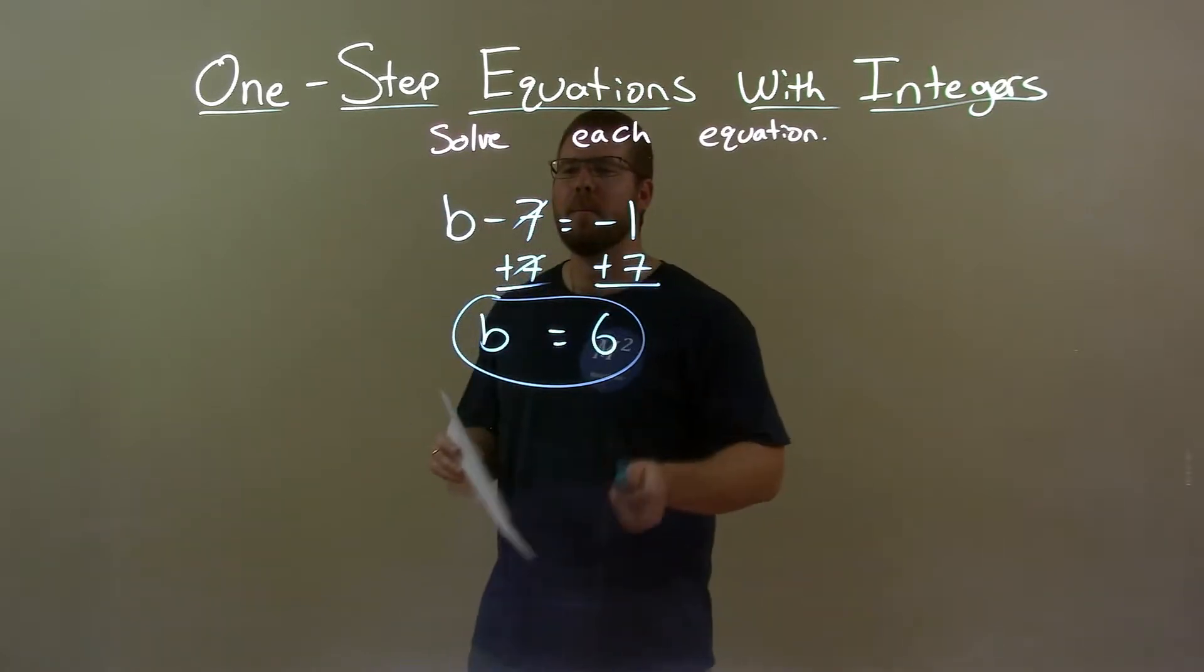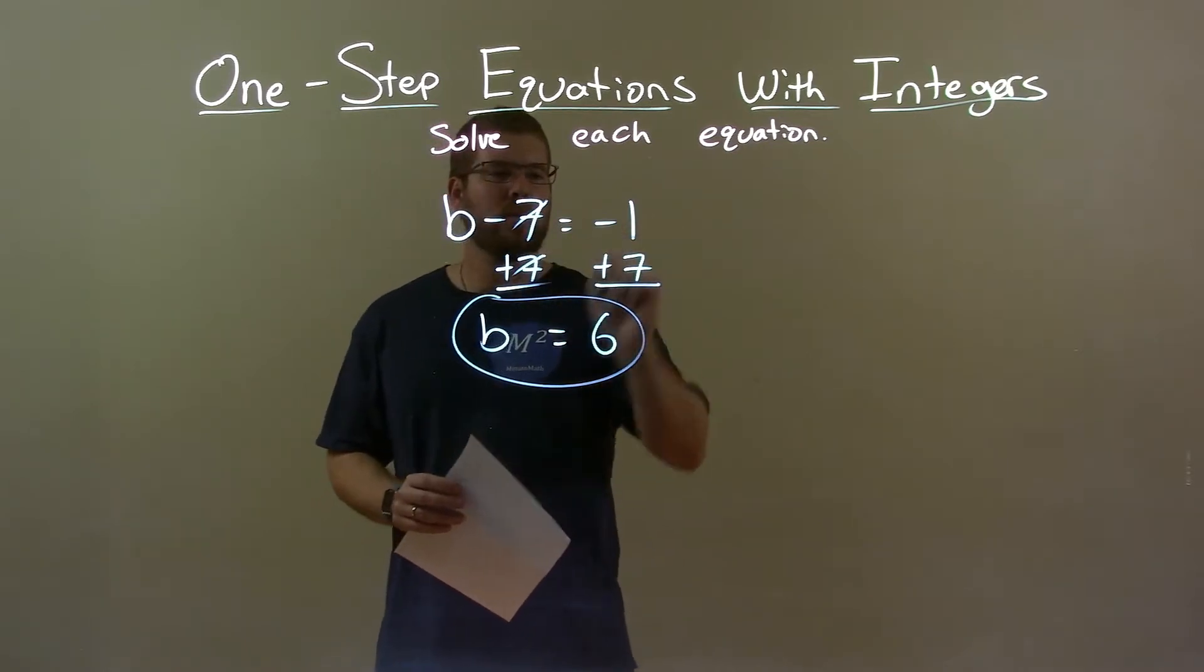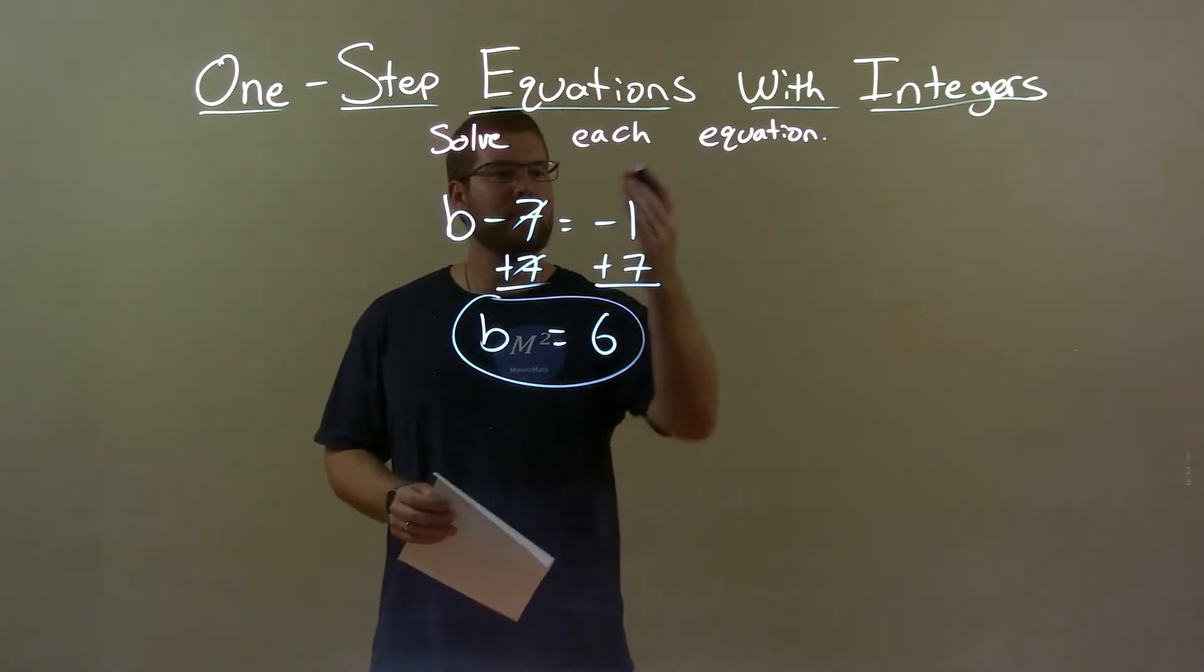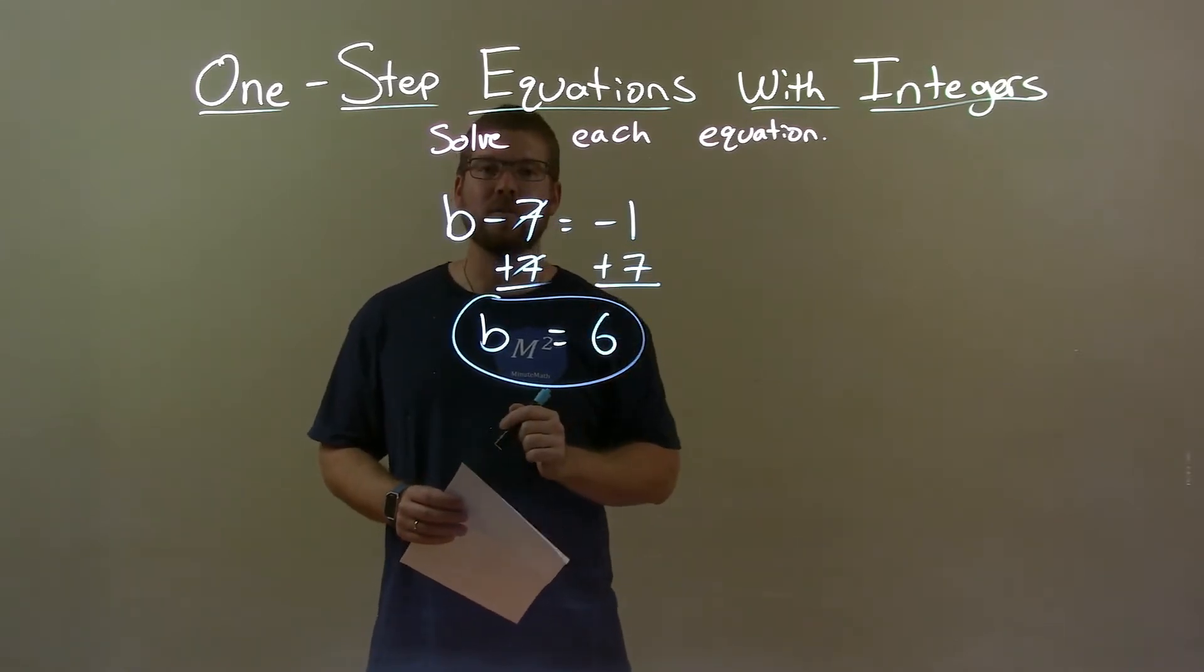Quick recap: we're given b minus 7 equals negative 1, and we have to solve for b. I add 7 to both sides and that gets me b by itself. Negative 1 plus 7 is positive 6, so again, final answer: b equals positive 6.